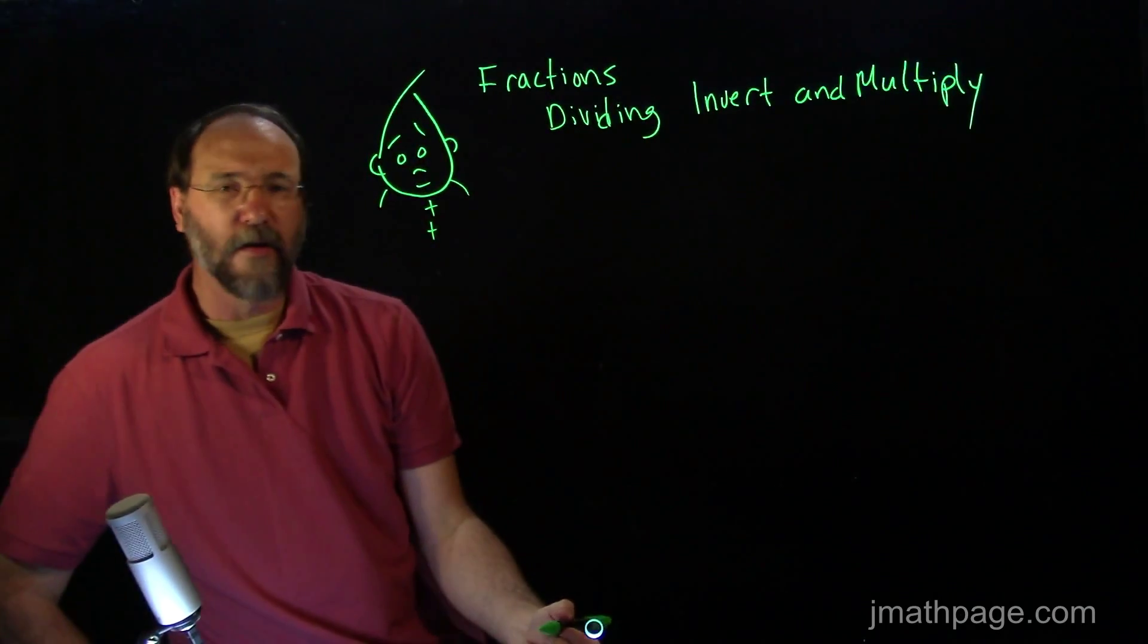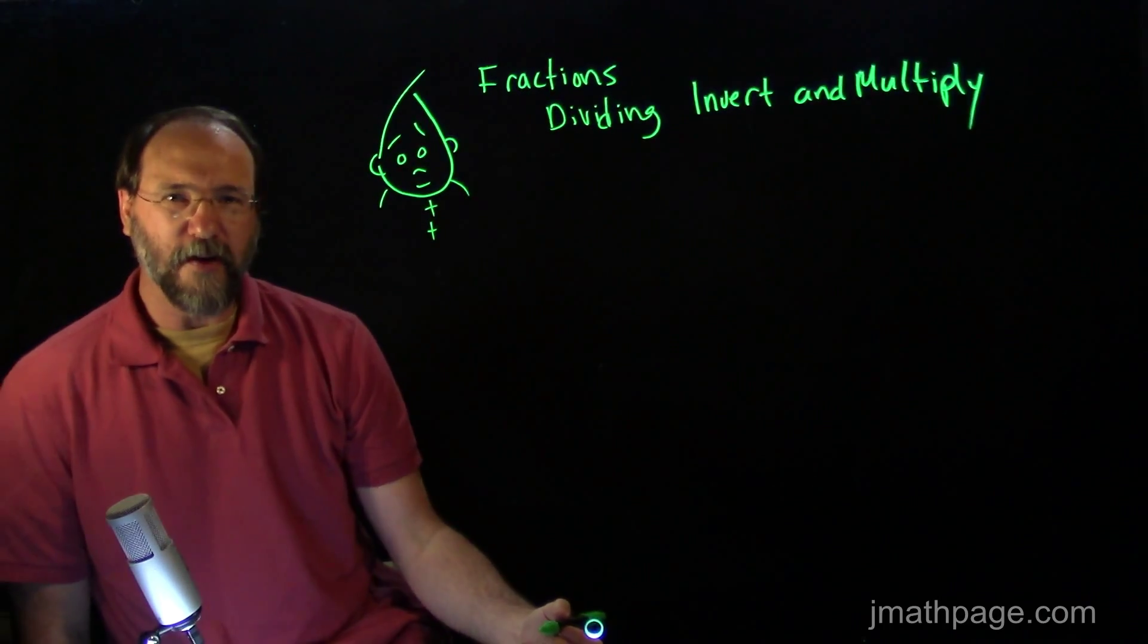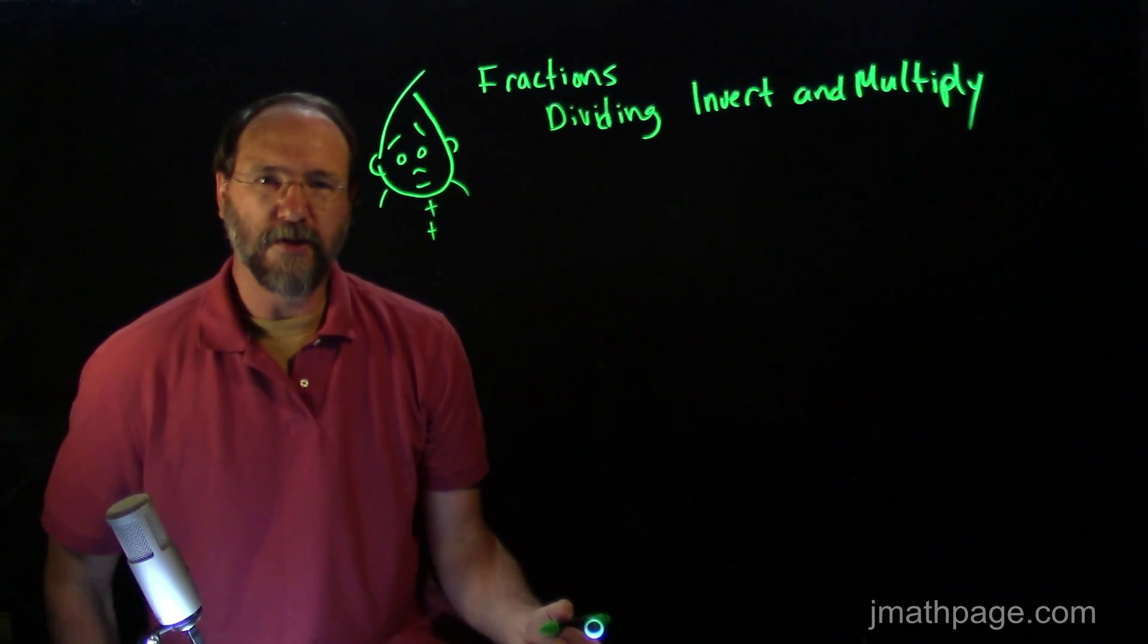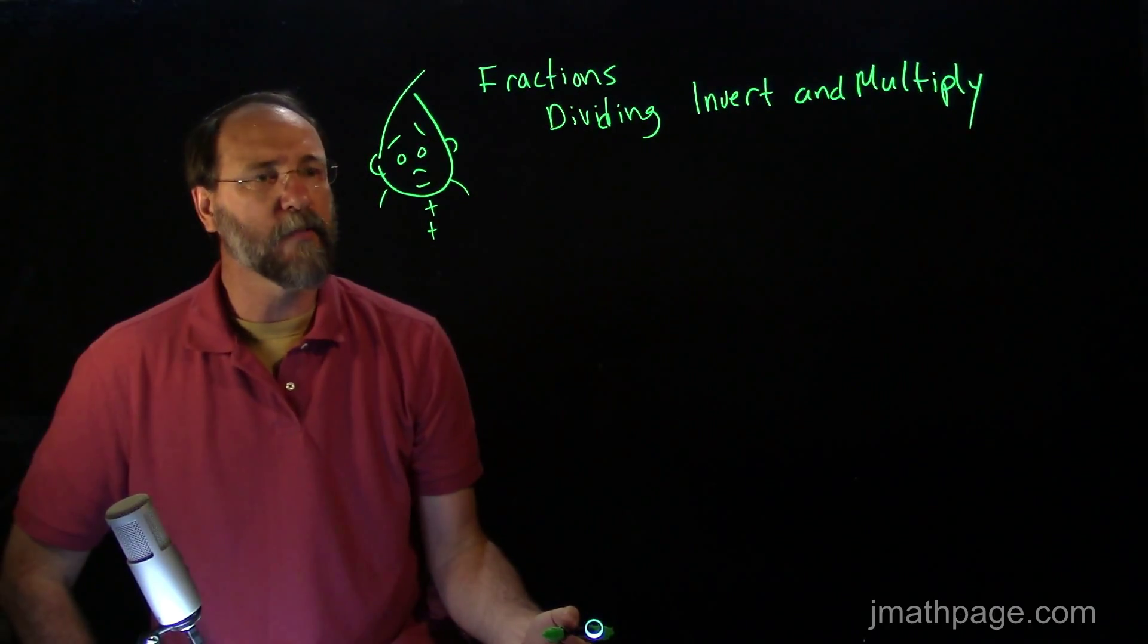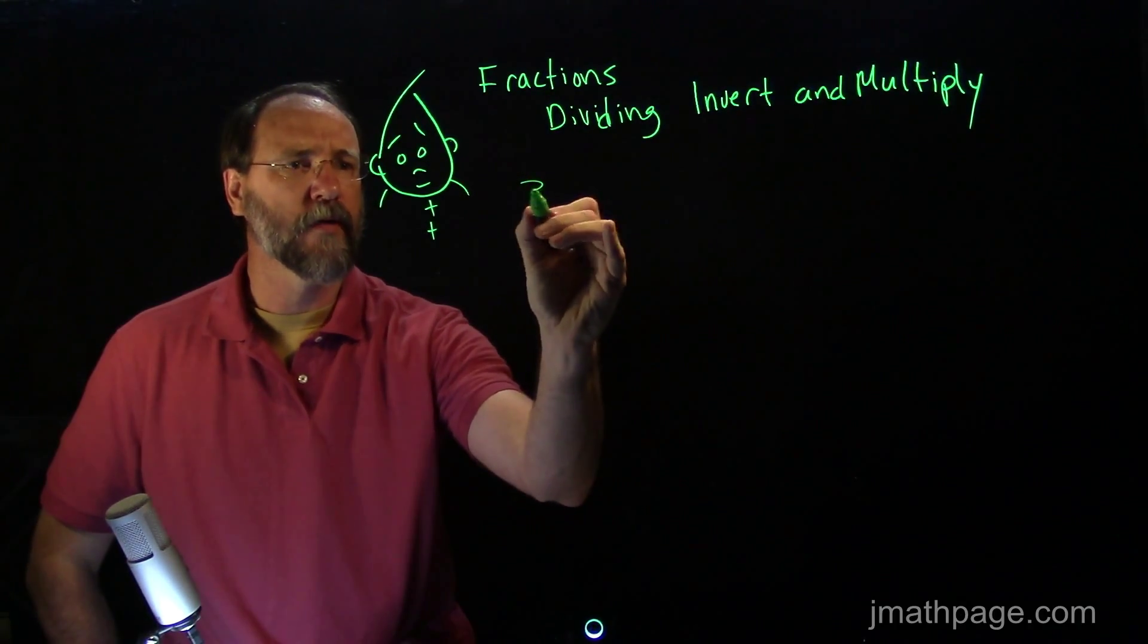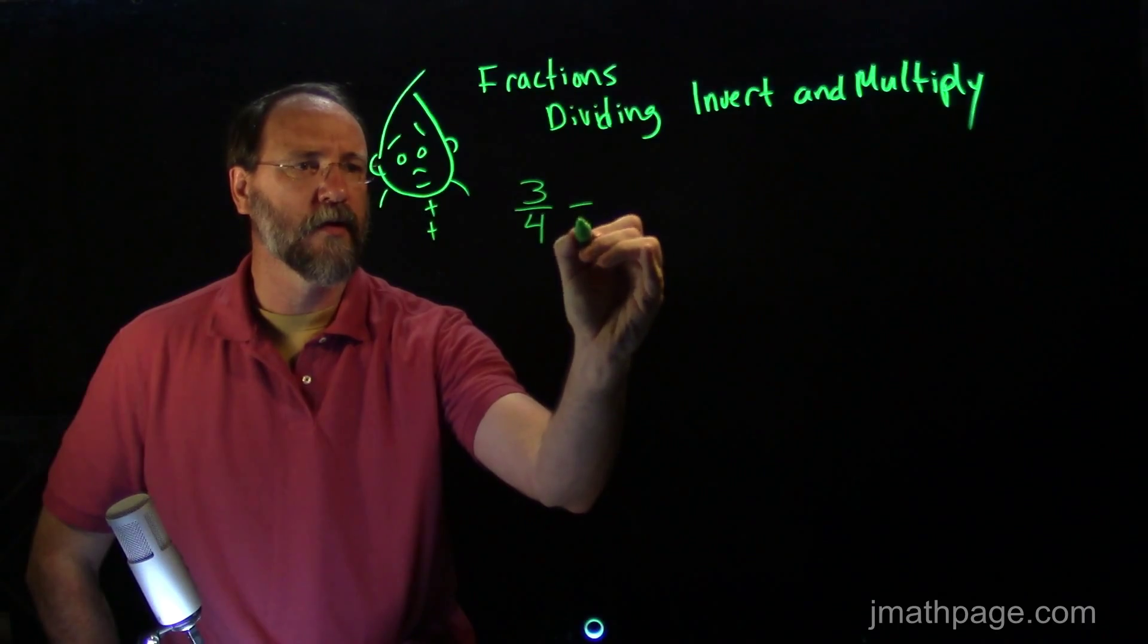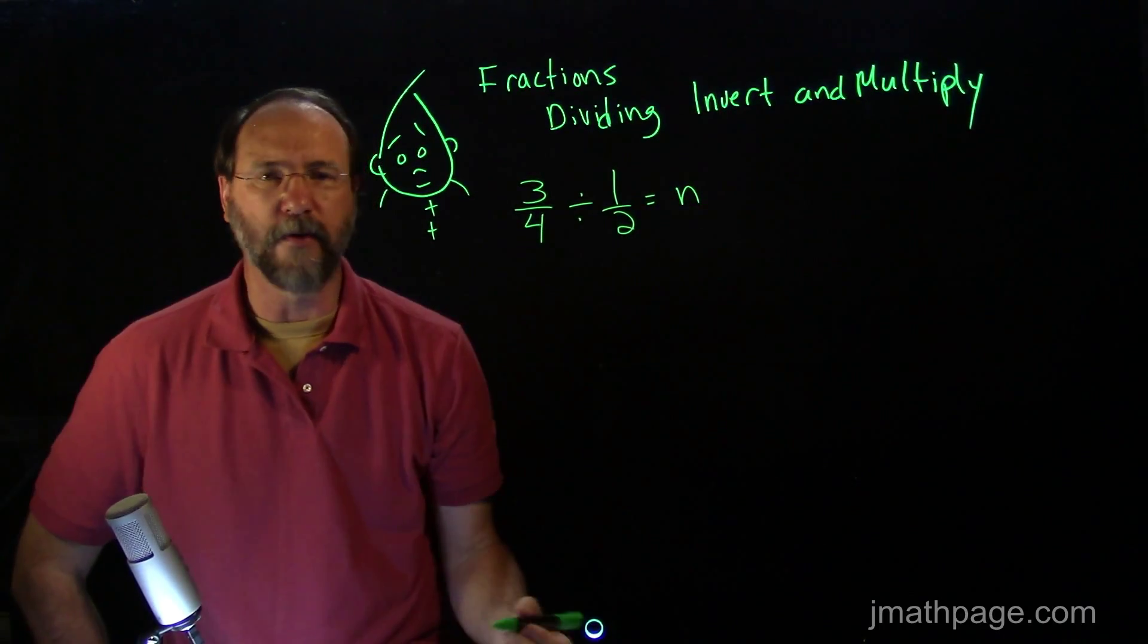Now, math has rules, so this whole thing about flipping a fraction and multiplying it to find the answer to a division problem that has fractions in it, we've got to understand it a little bit better. So I'm going to give you one and we're going to talk through it. So I'm going to start with 3 fourths divided by a half. We want to know that as some number.